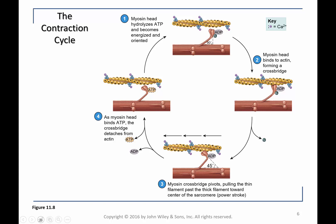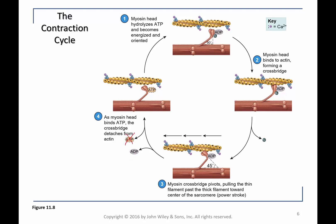An important point: if ATP is depleted, the crossbridge that is binding to the thin filament at the end of a contraction cycle is stuck, because ATP reduces the affinity of myosin for actin and allows it to release. If you cannot release the crossbridge at the end of the power stroke, then you end up in rigor mortis. Rigor mortis is the stiffness of skeletal muscles after death due to the depletion of ATP supplies.